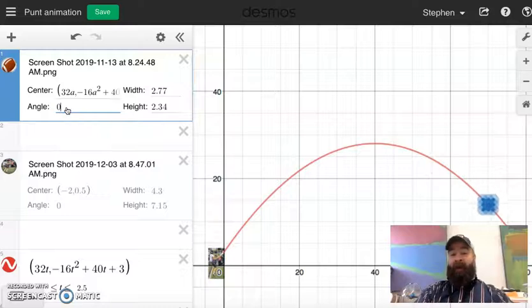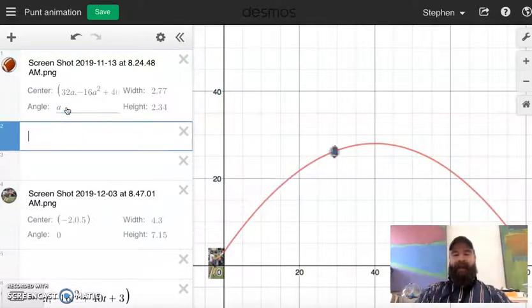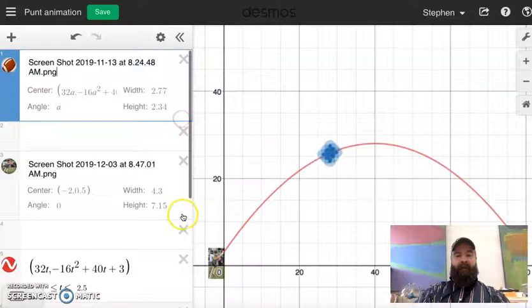If I wanted my ball to spin, not my punter, I change the angle to A. Now you'll see it's slowly spinning as it flies through the air.